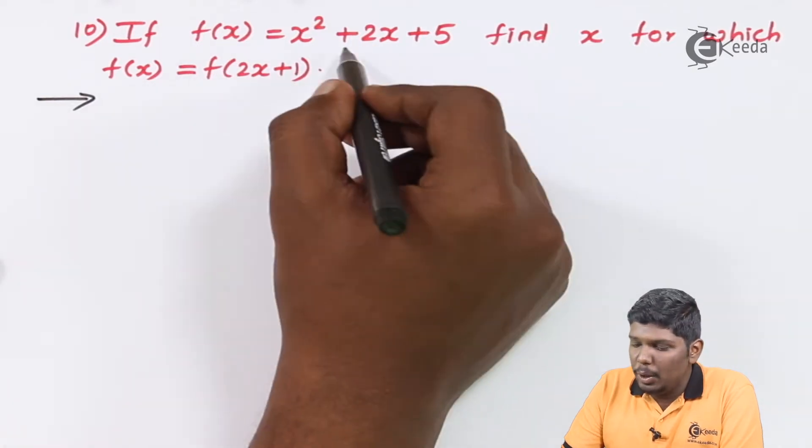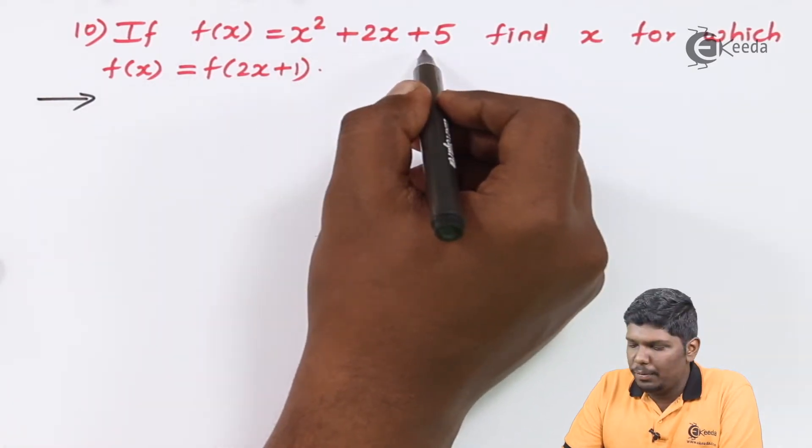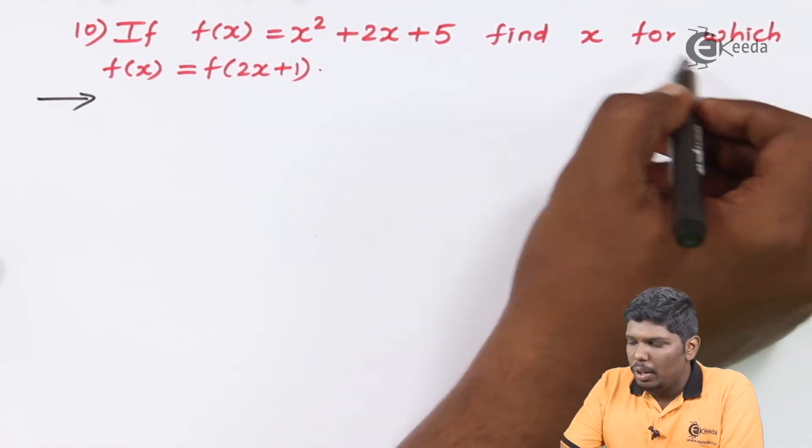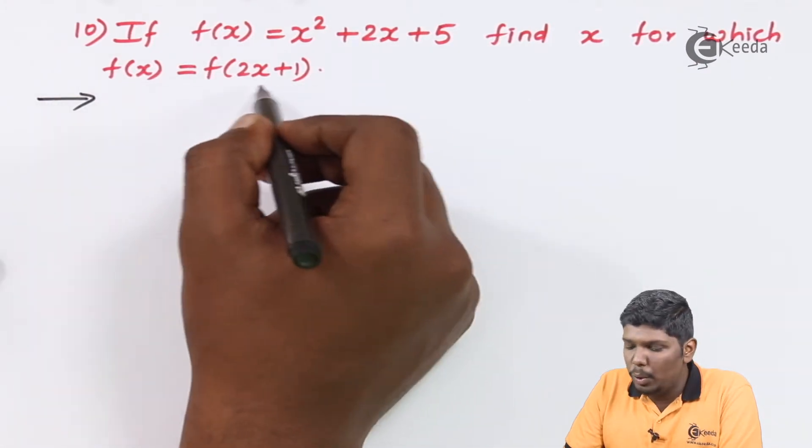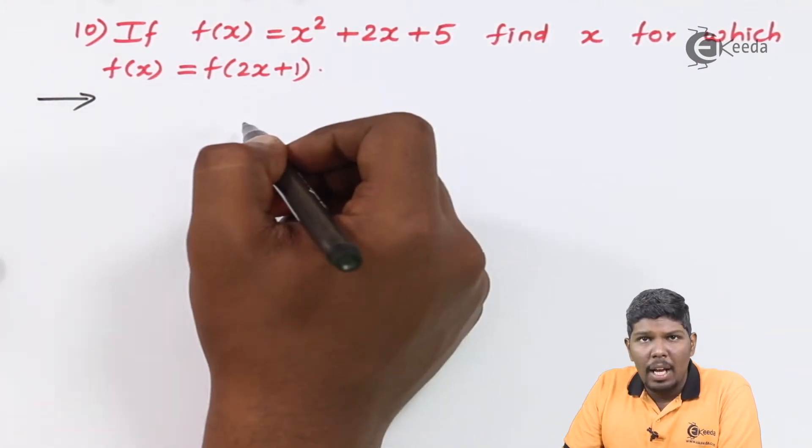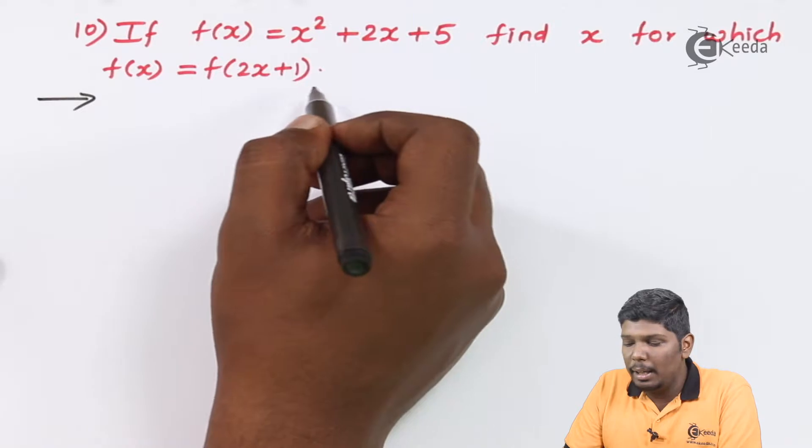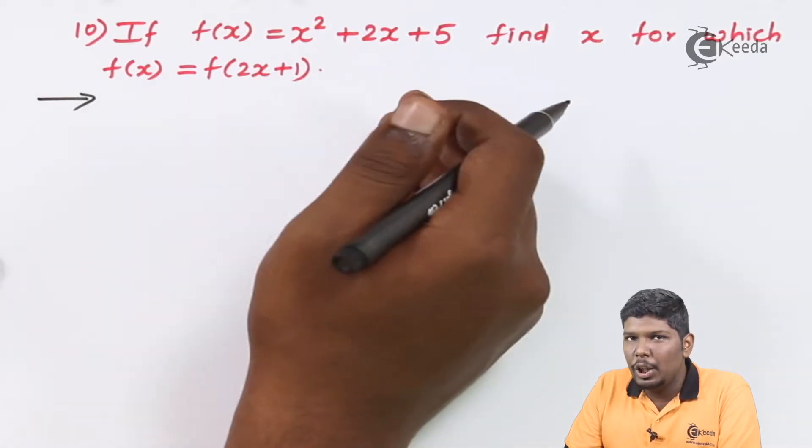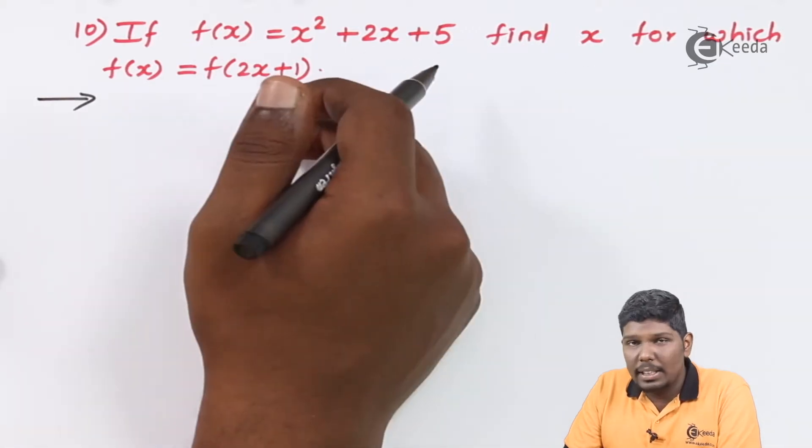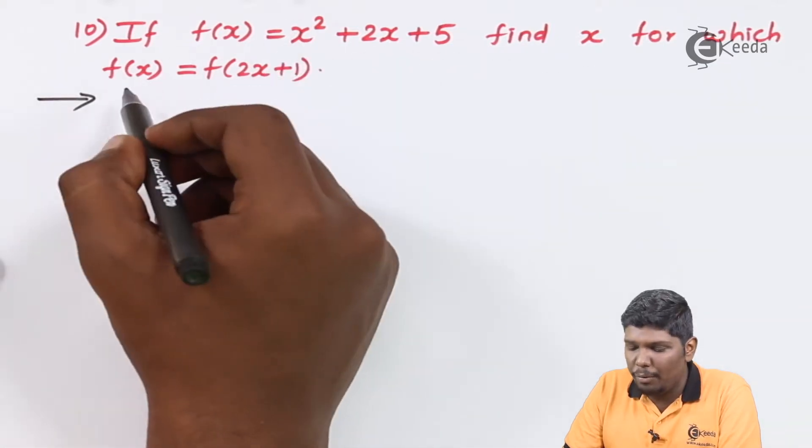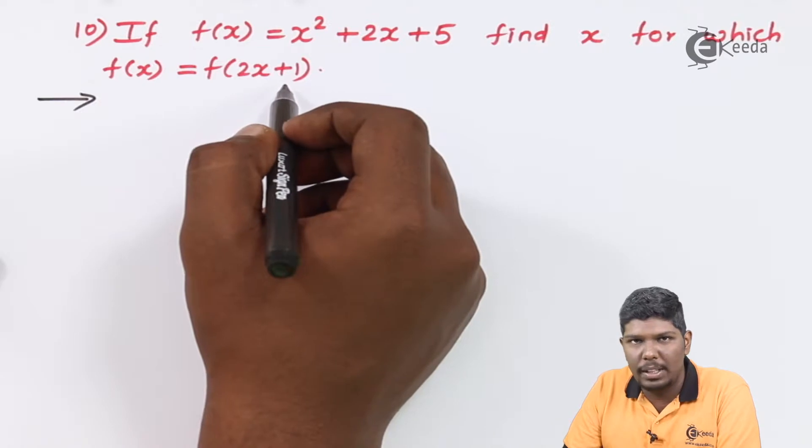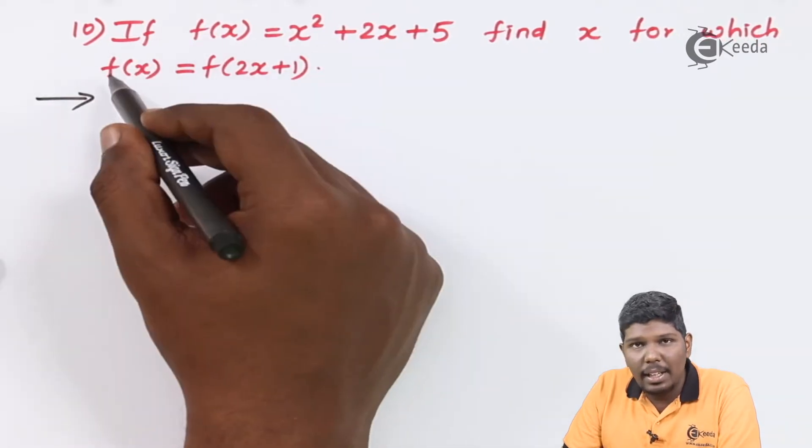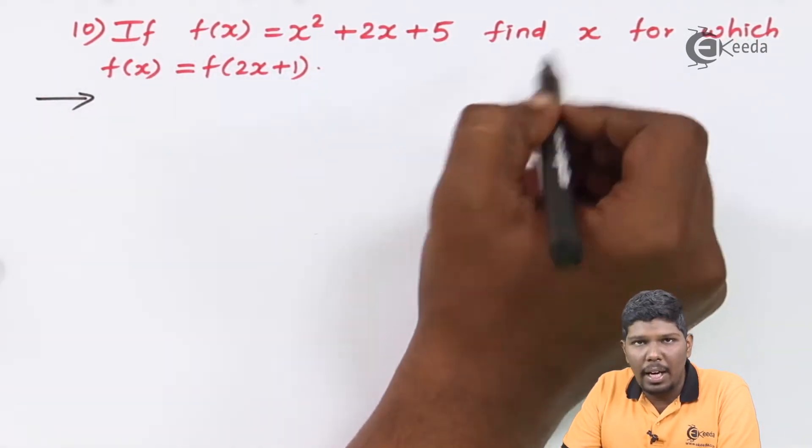If f(x) = x² + 2x + 5, find x for which f(x) = f(2x+1). Now this numerical is a little bit different. In last time we have covered sums which are including LHS equal to RHS. Now in this case it is already given that f(x) = f(2x+1). So using this relation we have to find the value of x.